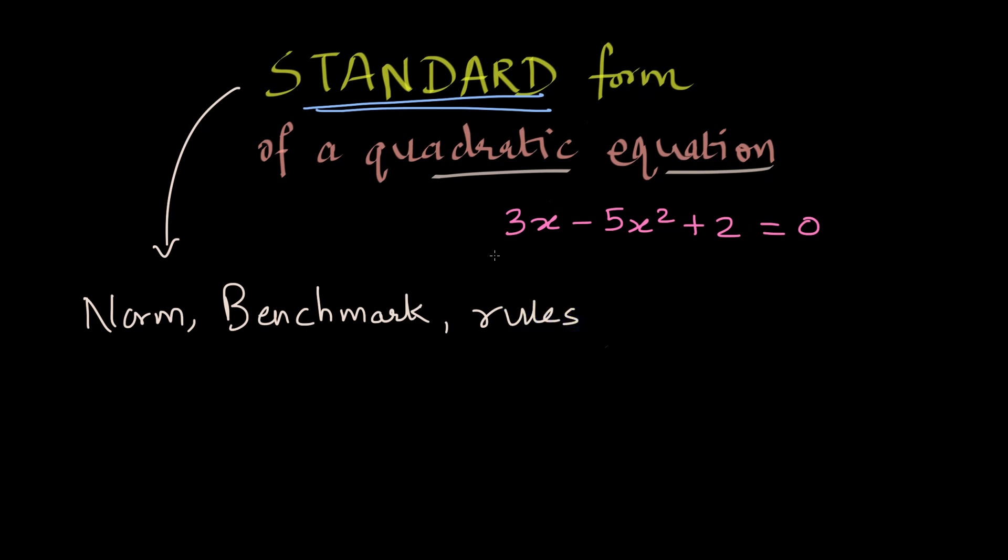So basically, standard is nothing but some norm across the world which is accepted or some benchmark or certain rules by which we communicate with each other. Standardizing something helps us communicate things faster and better. So let's now understand what is the standard form of the quadratic equation.